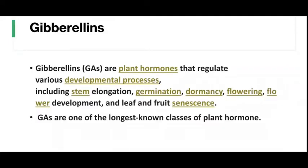Gibberellins are the plant hormones that regulate various developmental processes including stem elongation, germination, dormancy, flowering, flower development, and leaf and fruit senescence. Gibberellins are one of the longest known classes of plant hormones.